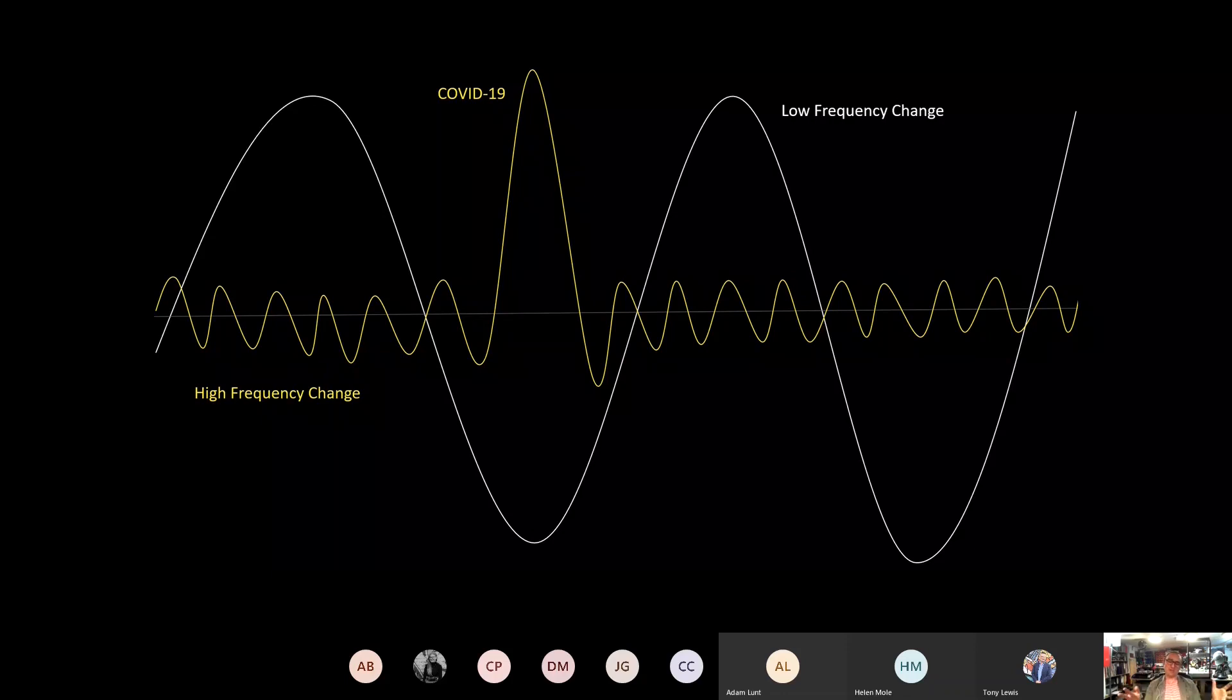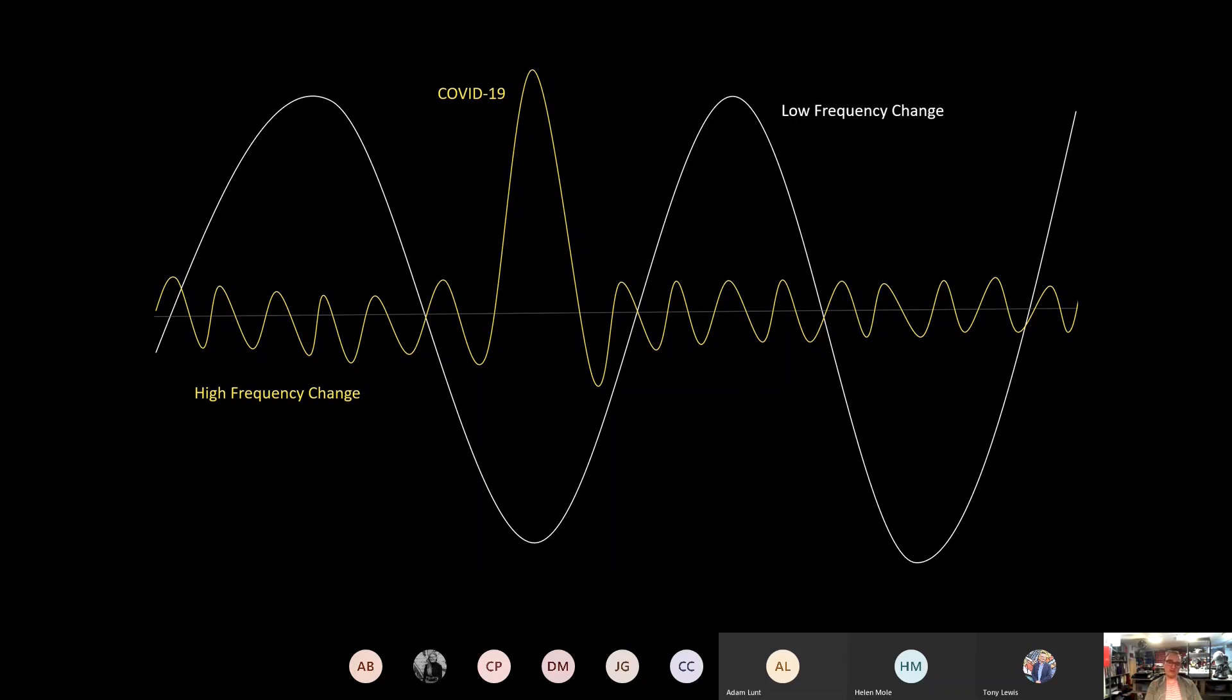So you've got these low frequency changes and these high frequency changes, and the strategy of continuous optimization doesn't work for the stage of high frequency change. And it doesn't work for the possibility of these very unusual events.